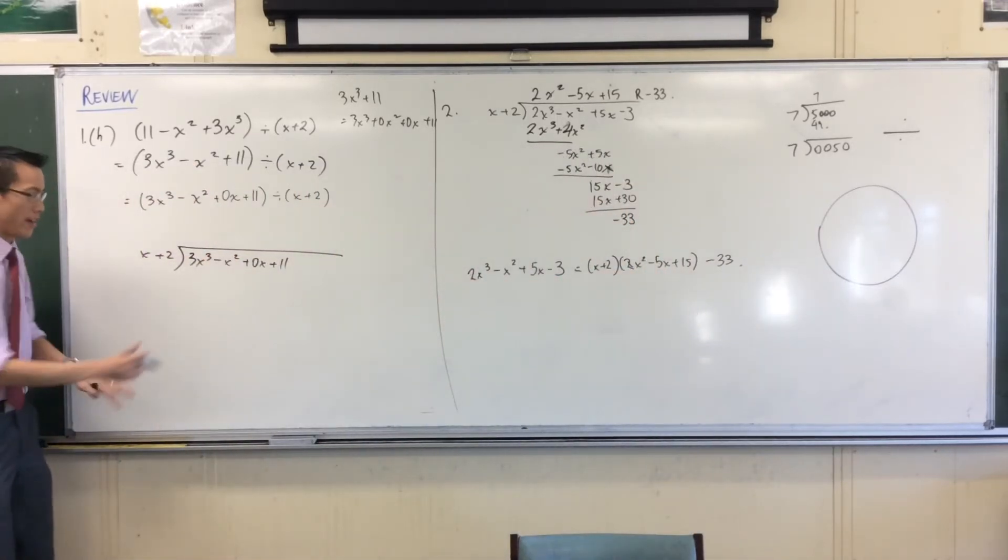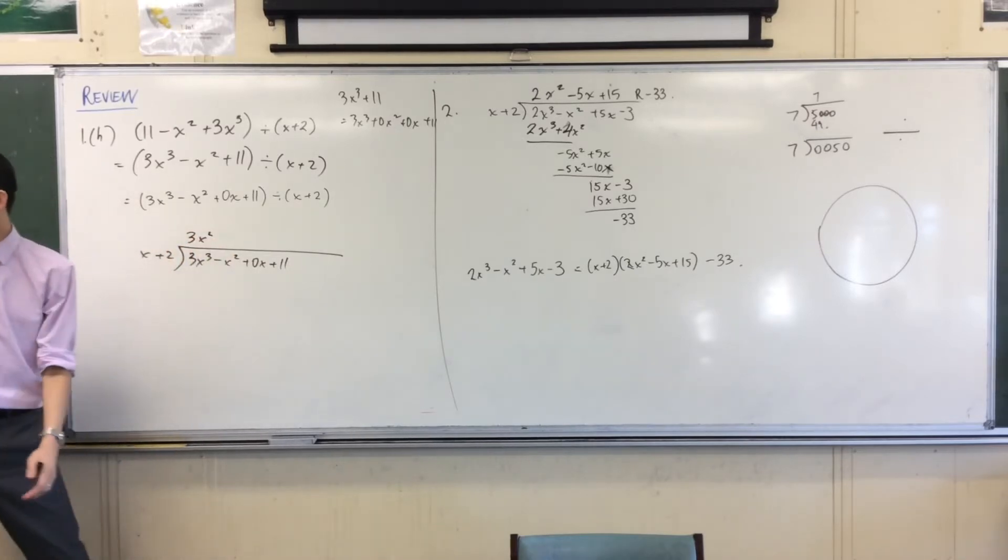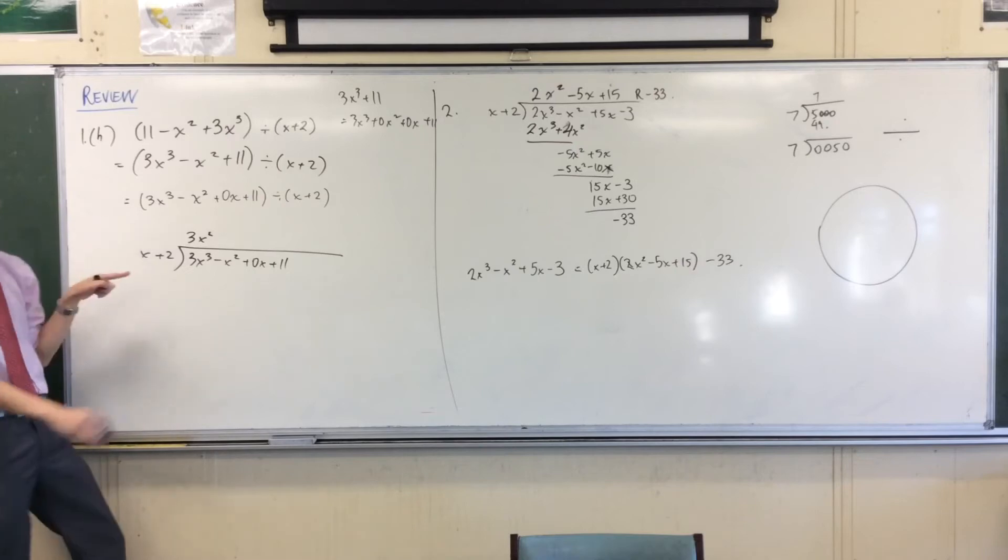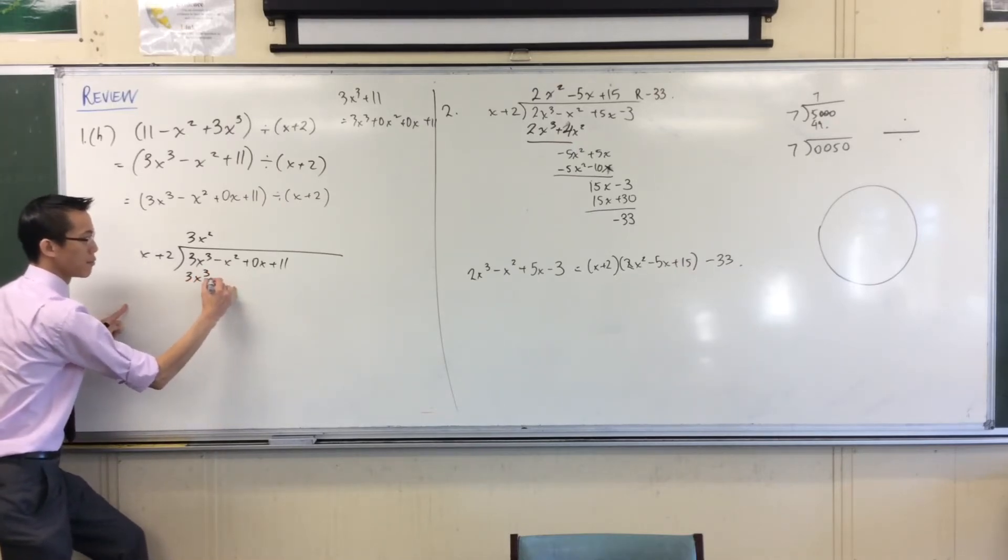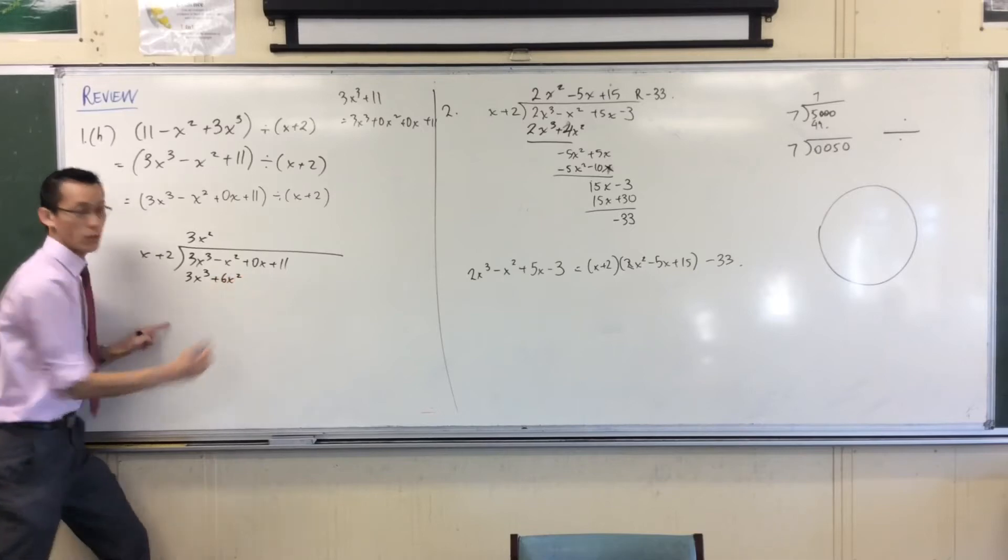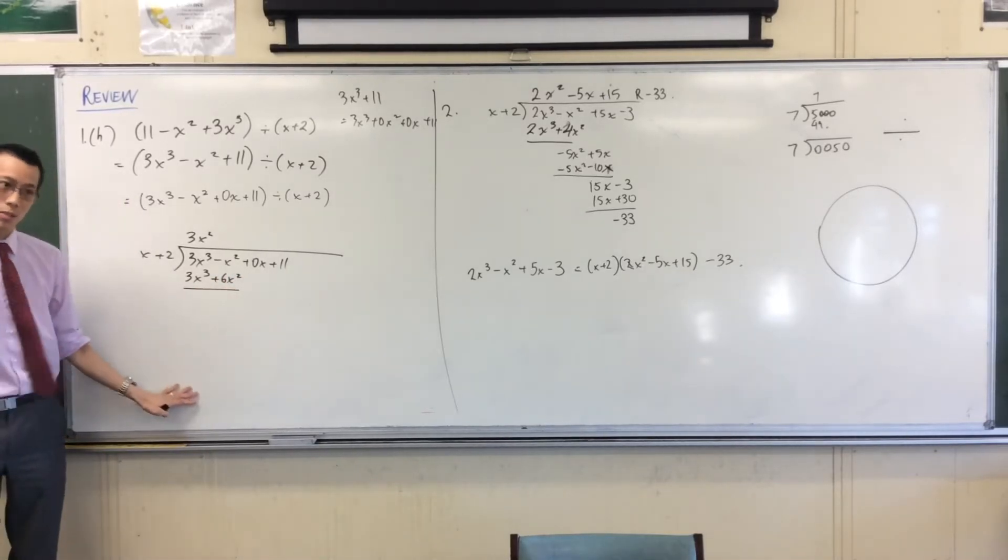What is 3x squared? It's how many times x goes into this. So 3x squared up here. What do I do with that? Multiply out the front. So I get 3x cubed plus 6x squared. Happy? Yeah? Okay.